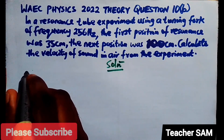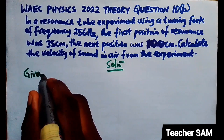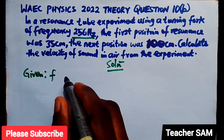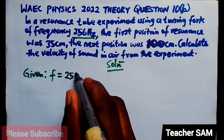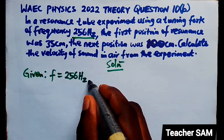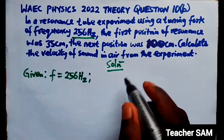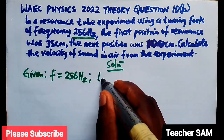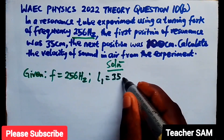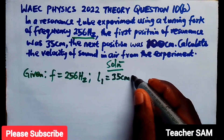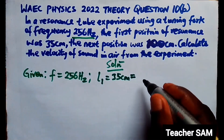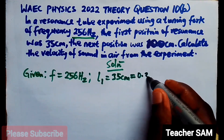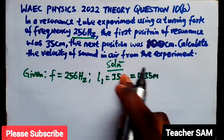We are given — it's always good to extract this information. The frequency is 256 Hz. We are also given that the first position of resonance, L1, is equal to 35 cm. Converting to SI units, dividing by 100, that gives us 0.35 meters.